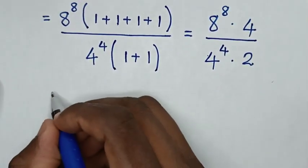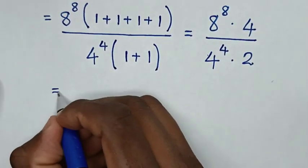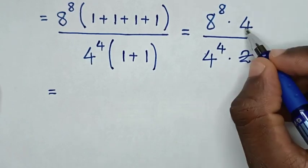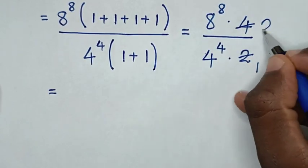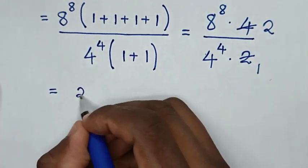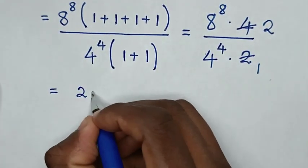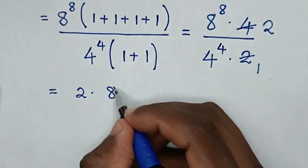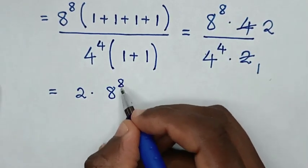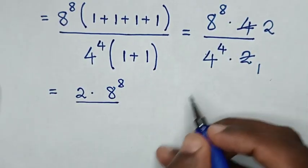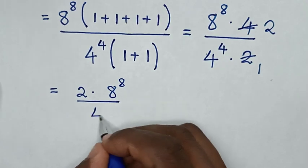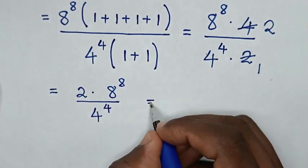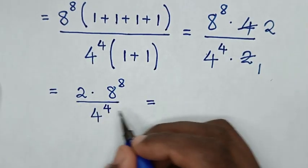Then it will be equal to: 2 divided by 2 is 1, and 4 divided by 2 is 2. So here it will be 2 times 8 power 8, over 4 power 4.